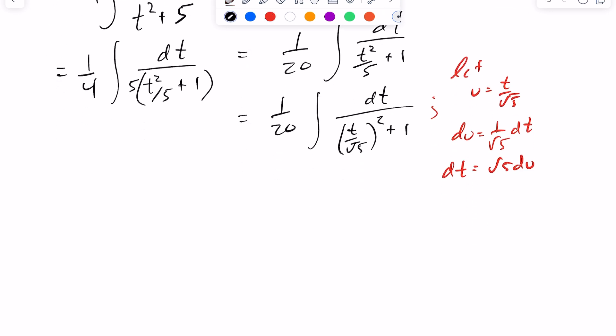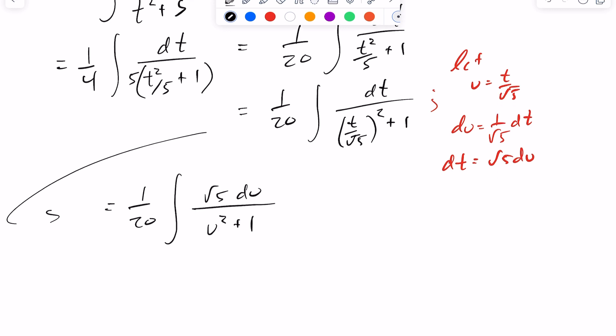So going ahead and doing this substitution, we're going to get 1 over 20, the integral of dt can be replaced by root 5 du. And this will be u squared plus 1. So this is the root of 5 over 20, integral of du over u squared plus 1.